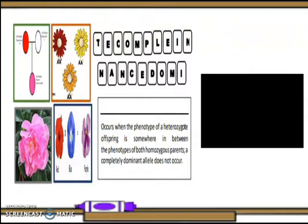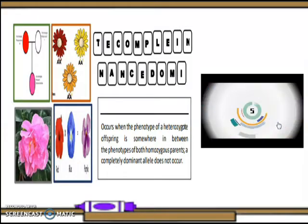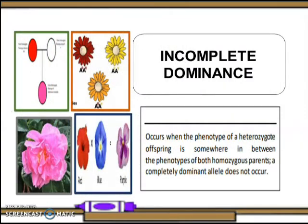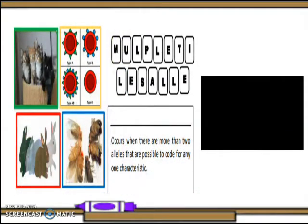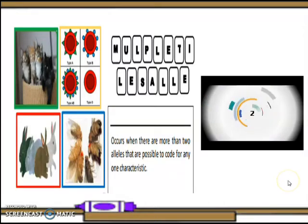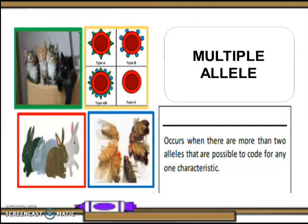Number two: it occurs when the phenotype of the heterozygote offspring is somewhere in between the phenotype of both homozygous parents. A completely dominant allele does not occur. The answer is incomplete dominance. Number three: it occurs when there are more than two alleles that are possible to code for any one characteristic. The answer is multiple alleles.